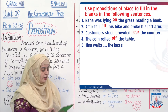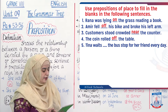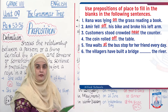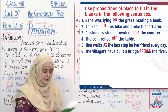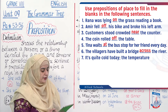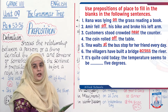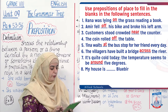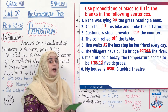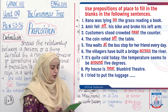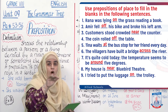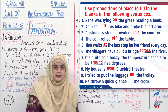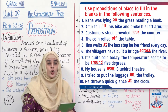Tina waits at the bus stop for her friends every day. The villagers have built a bridge across the river. It's quite cold today — the temperature seems to be around five degrees. My house is near Bluebird Theatre. I tried to put the luggage on the trolley. And the last sentence: he threw a glance at the clock. A glance means a quick, short look. This was preposition of place.